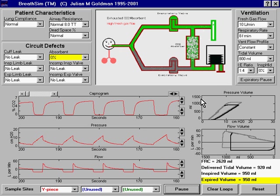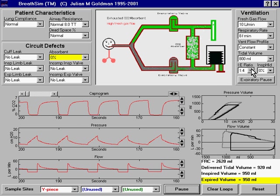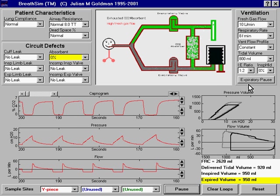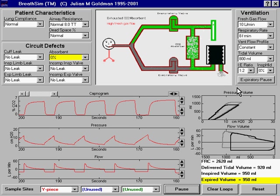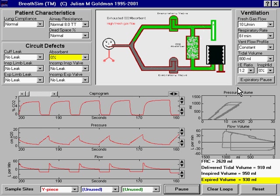So a change in I to E ratio will change the contribution of fresh gas. Another way that we can correct the problem of hyperventilation due to the high fresh gas flow would be to decrease the set tidal volume from 800 milliliters to 400 milliliters.